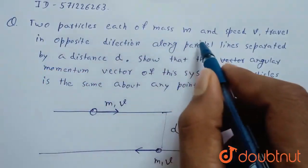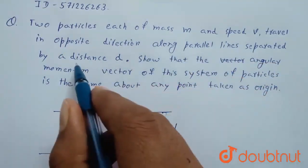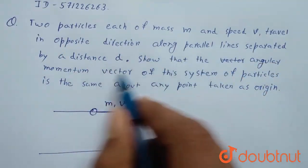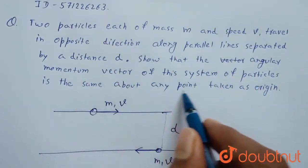Two particles each of mass m and speed v travel in opposite directions along parallel lines separated by a distance d so that the angular momentum vector of this system of particles is the same about any point taken as origin.